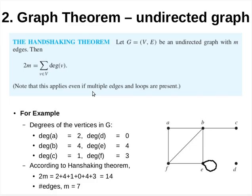Next we shall discuss graph theorems. The first graph theorem to be discussed is the Handshake Theorem. This theorem is defined for an undirected graph and states that the summation of degrees of all vertices in graph G is equal to twice the number of edges in the given graph. In the given graph G, the summation of degrees of all 6 vertices is equal to twice the number of edges.